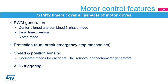The timer's four main electrical motor control features are: specific PWM modes for controlling power switches including center-aligned, combined three-phase, dead time insertion for complementary PWM generation, and six-step mode for brushless DC motors; power stage protection with a dual-level emergency stop mechanism; sensor handling for quadrature encoders, hall sensors, and tachometer generators; and synchronized ADC triggering to properly manage voltage and current sensing and avoid acquisition issues due to switching noise in power stages.